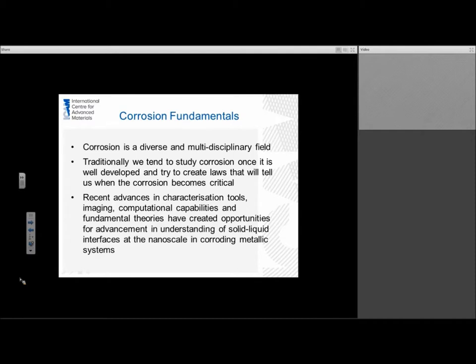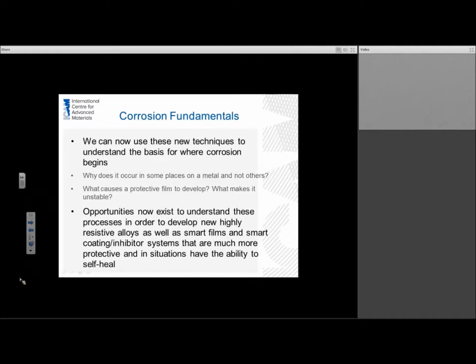Recent advances in characterization tools, imaging, computational capabilities and fundamental theories have created opportunities for the advancement and understanding of the solid-liquid interfaces down to the nano scale and corroding metallic systems. Now we can use these new techniques to understand the basis for where corrosion begins. So we can answer questions such as why does it occur in some places on a metal and not others? What causes a protective film to develop and what makes it stable or unstable?